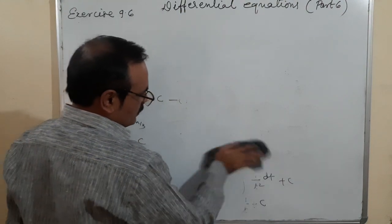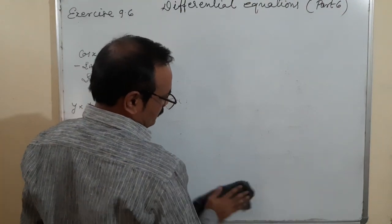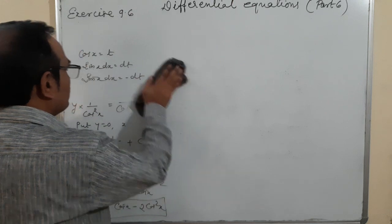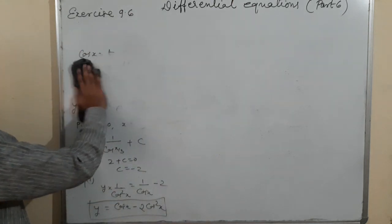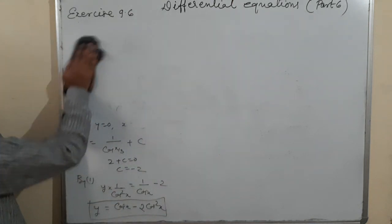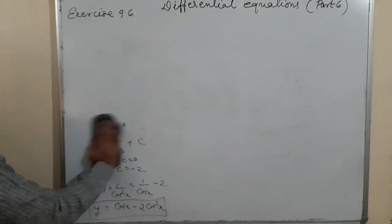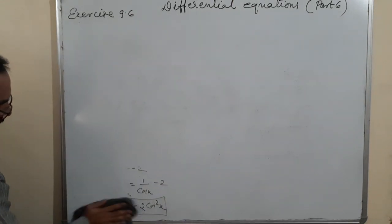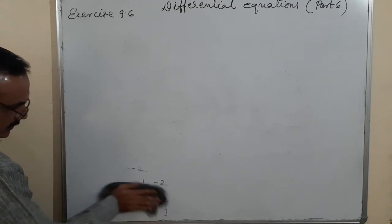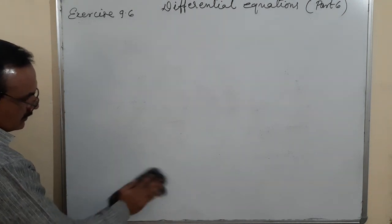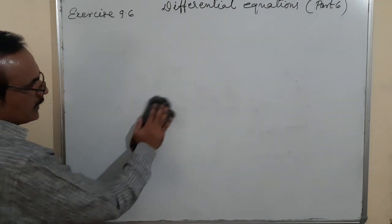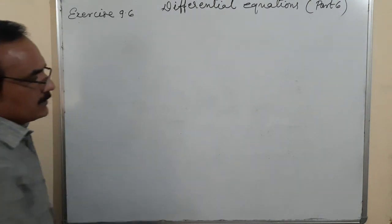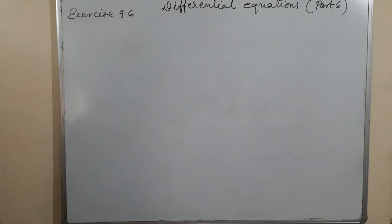These are the particular solutions where we just need to find the value of C by putting the given values of x and y, then the general solution is converted to a particular solution.